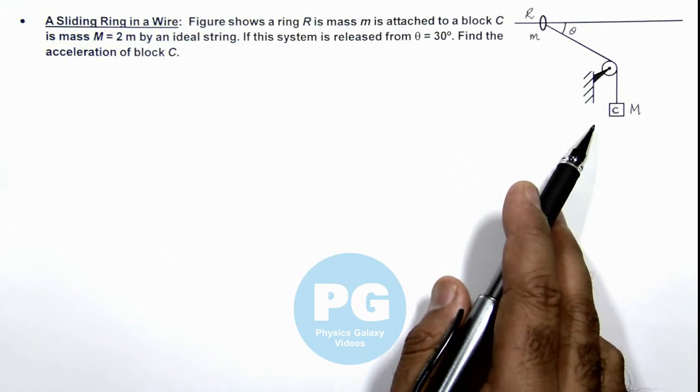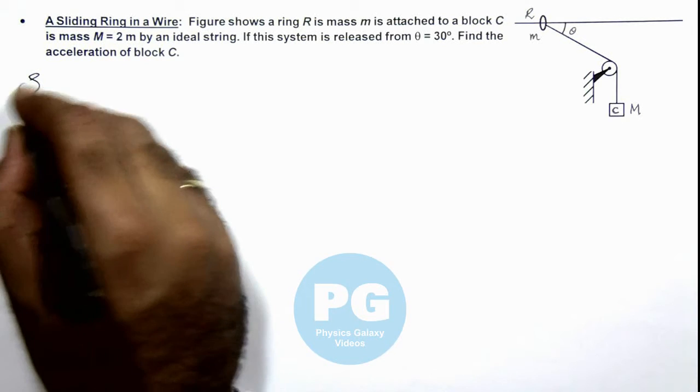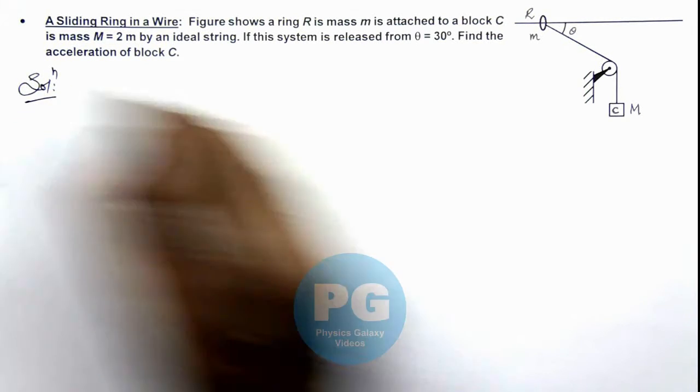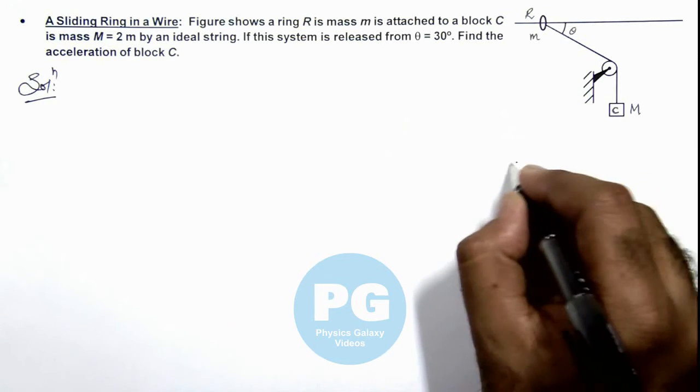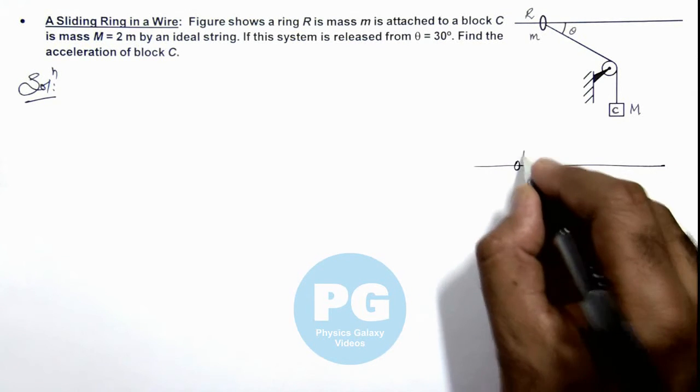So in this situation, here if we analyze the motion of mass m and capital M, we can see for... let us draw the figure again to analyze it. This is the ring.